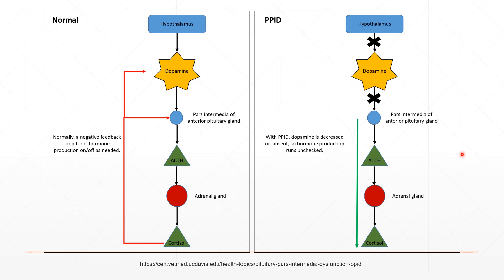In PPID, or pituitary pars intermedia dysfunction, there is the absence of a negative feedback that normally controls hormone production from the anterior pituitary and adrenal gland. Because of this absent negative feedback, there is overproduction of hormones such as ACTH and cortisol.